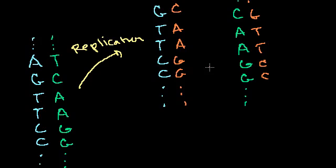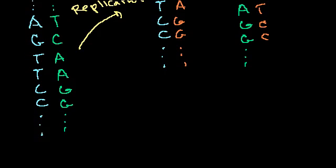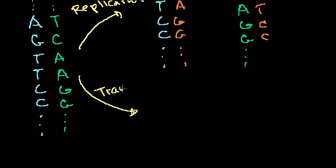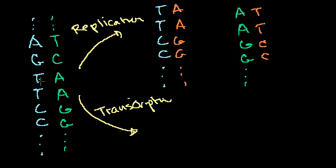Especially when we talk about mitosis and meiosis, I might say this is the stage where the replication has occurred. The other thing you'll hear a lot — and I talked about this in the DNA video — is transcription. One of the beautiful things about this double helix design is that it really is that easy to duplicate itself: you just split the two helices, and they become a template for each other, giving you a duplicate.